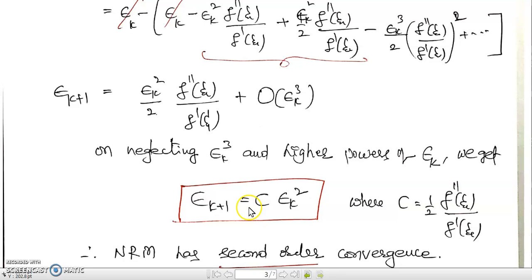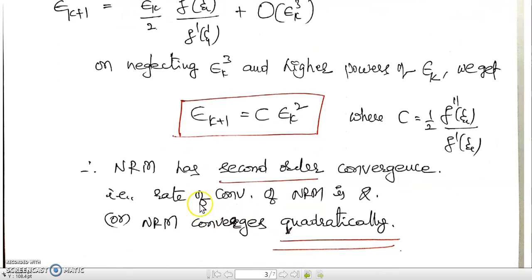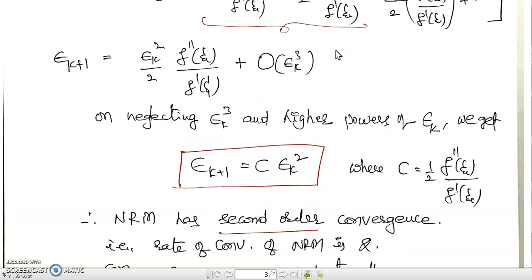Finally, ε_{k+1} = c · εk², where c = (1/2)·f''(ξ)/f'(ξ) is the asymptotic error constant. This is of the form ε_{k+1} = c · εk^p with p = 2. Therefore, the Newton-Raphson method has second-order convergence, i.e., rate of convergence 2. One can say NRM converges quadratically.